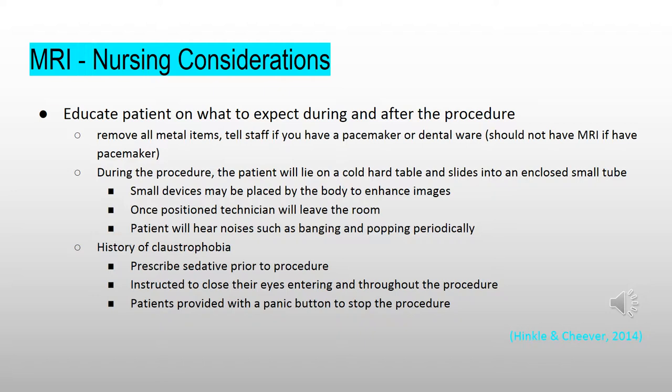MRI nursing considerations: the nurse should educate the patient regarding what to expect during and after the procedure. Patients scheduled for MRI should be instructed to remove all metal items such as hearing aids, hair clips, and medication patches with metallic foil components such as nicotine patches. During the procedure, the patient should be prepared to lie on a cold hard table and slide into an enclosed small tube. The nurse instructs the patient that he or she will hear noises including banging and popping sounds periodically. Patients with a history of claustrophobia may be prescribed a sedative prior to the procedure. Patients should be instructed to close their eyes before entering the tube and keep them closed as this may decrease claustrophobic symptoms. Patients should be reassured that they will be provided with a panic button that they may press if they need to stop the procedure.